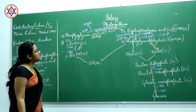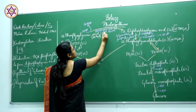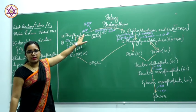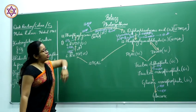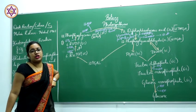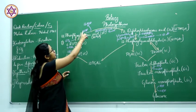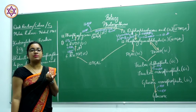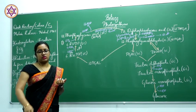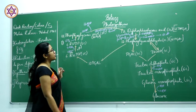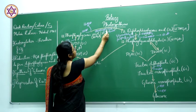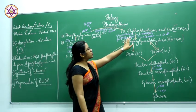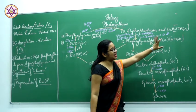This phosphoglyceric acid is a 3-carbon compound. Then 12 ATP molecules are converted into 12 ADP molecules, releasing 12 inorganic phosphate atoms. With the help of phosphoglycerate kinase enzyme, these are converted into 12 diphosphoglyceric acid, also a 3-carbon compound.